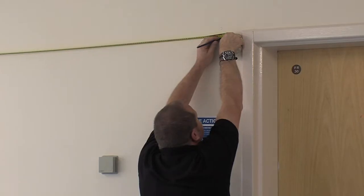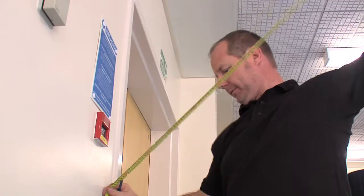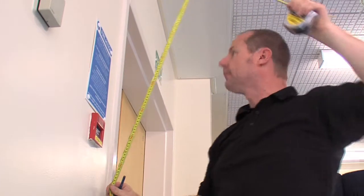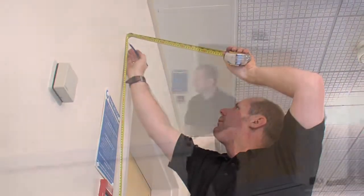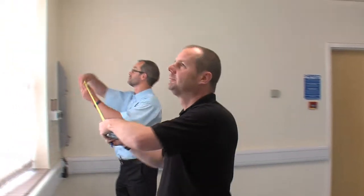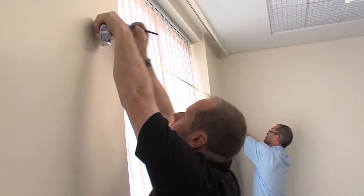The first stage is to mark out the dimensions on the wall. The height needs to be 2.1 metres from the floor, and ideally this is of course a two-man job.